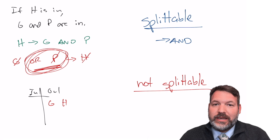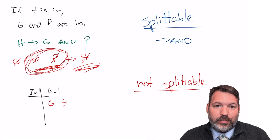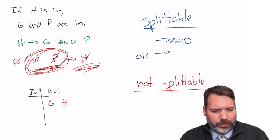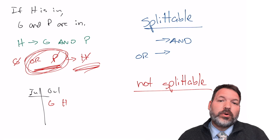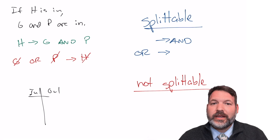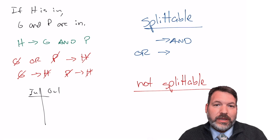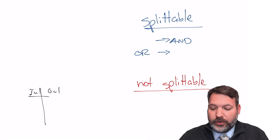This is also a splittable statement. In general, if OR precedes the arrow — OR is on the antecedent (if) side — that is splittable. So we get two separate contrapositives: 'if G is out, H is out' and 'if P is out, H is out.' G and P have nothing to do with each other here.